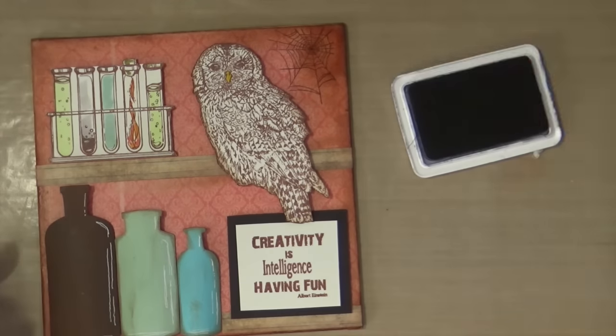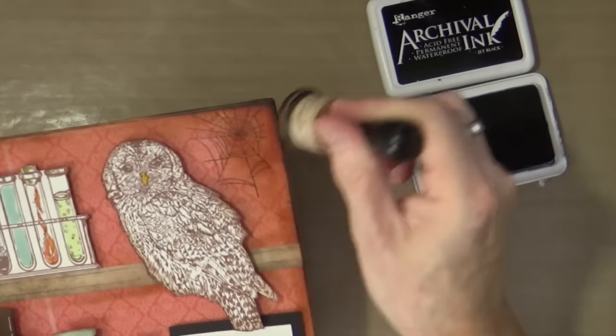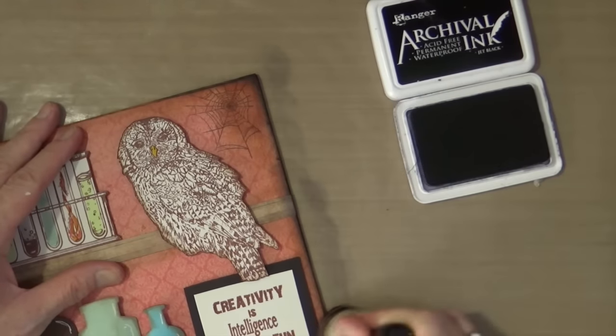While I've still got the jet black archival ink out, I'm just going to use an ink blending foam and just go around the edge just to darken and dirty it just a little bit more, just to make it a bit more grungy.